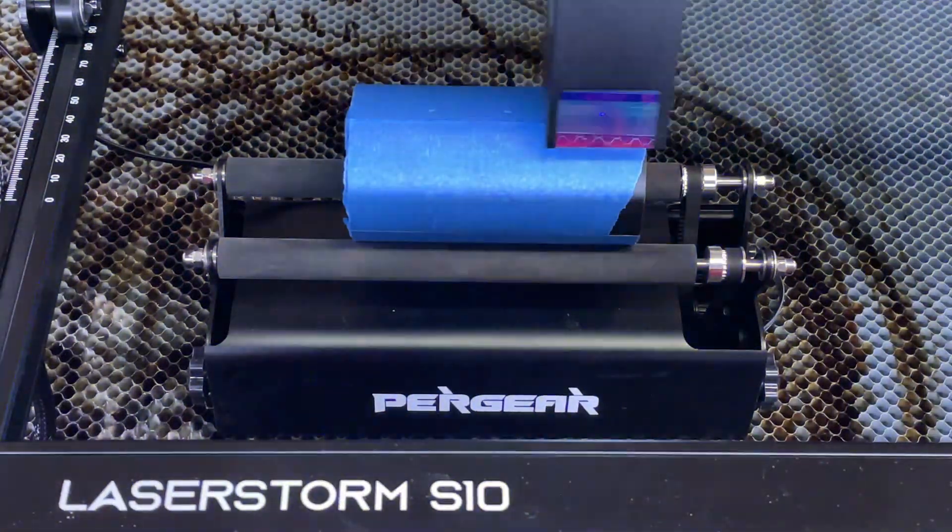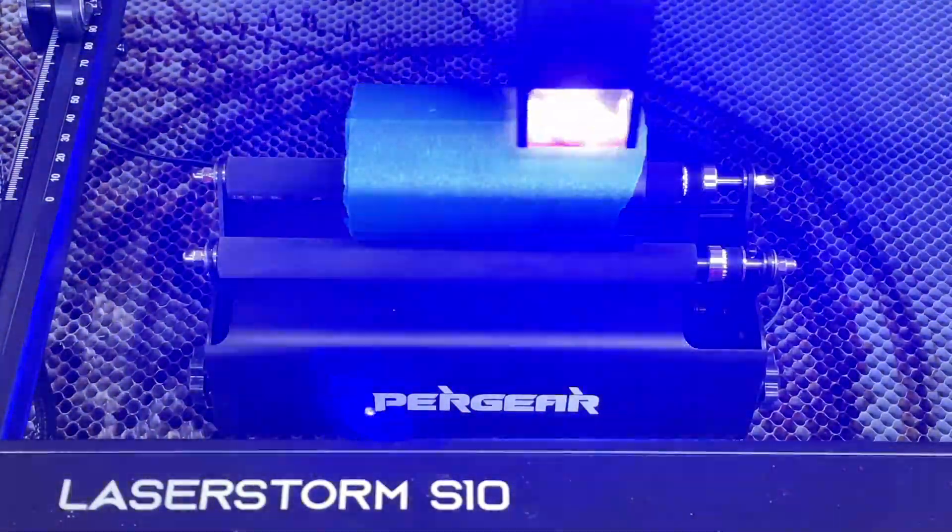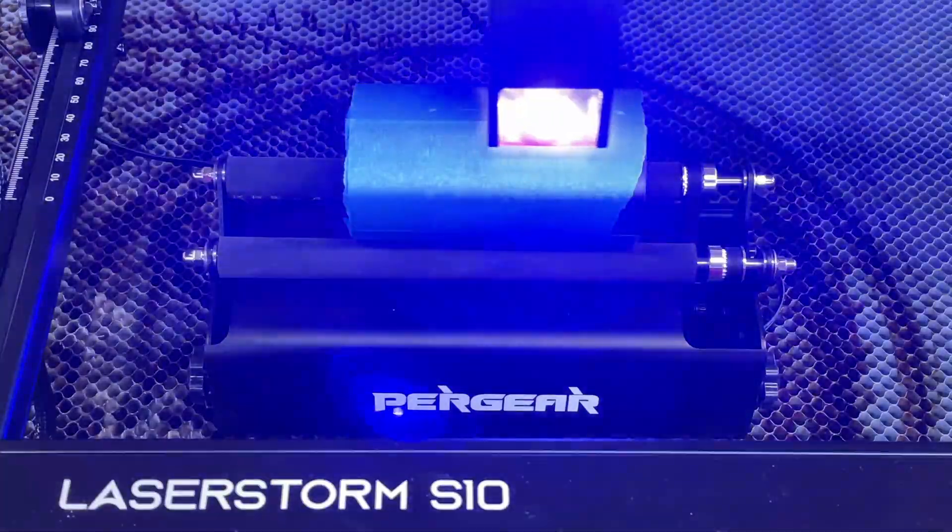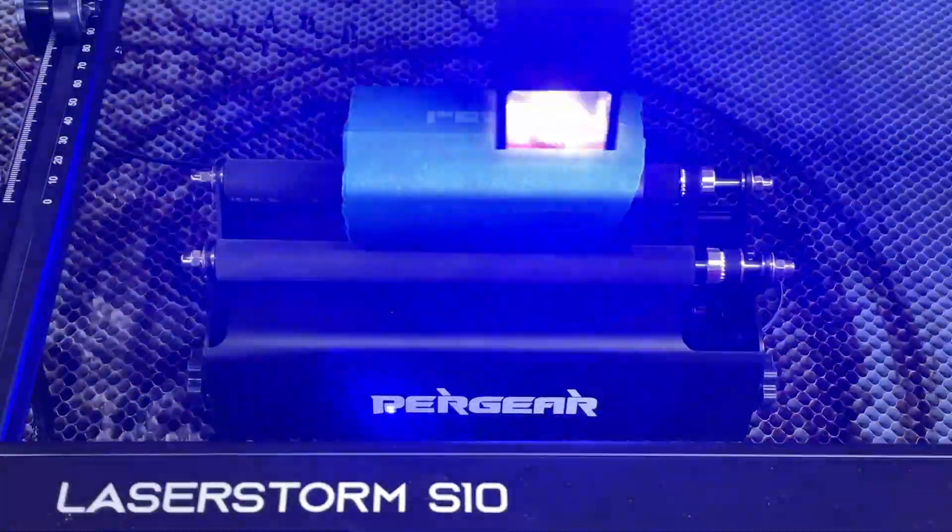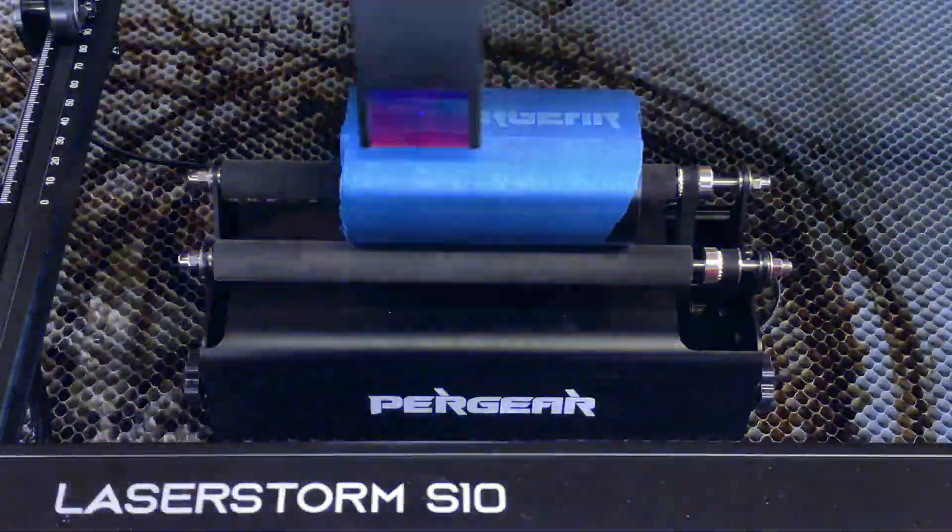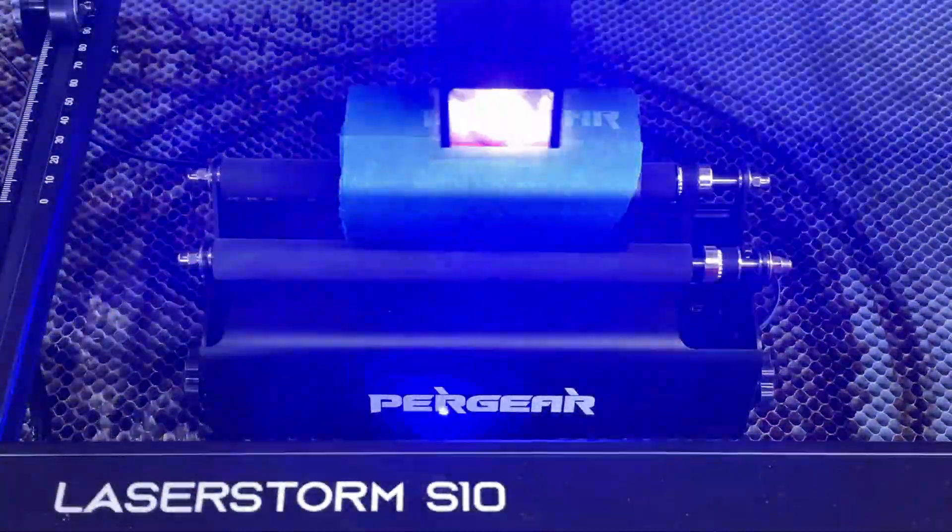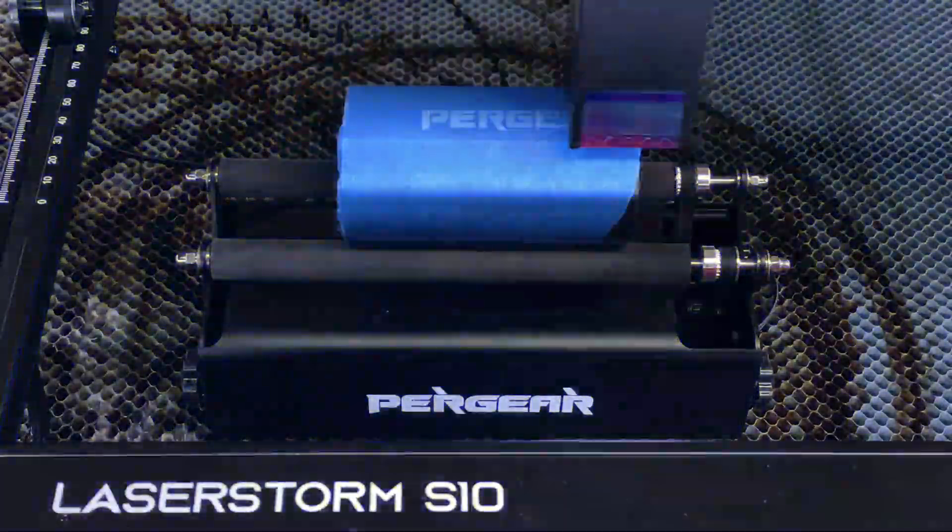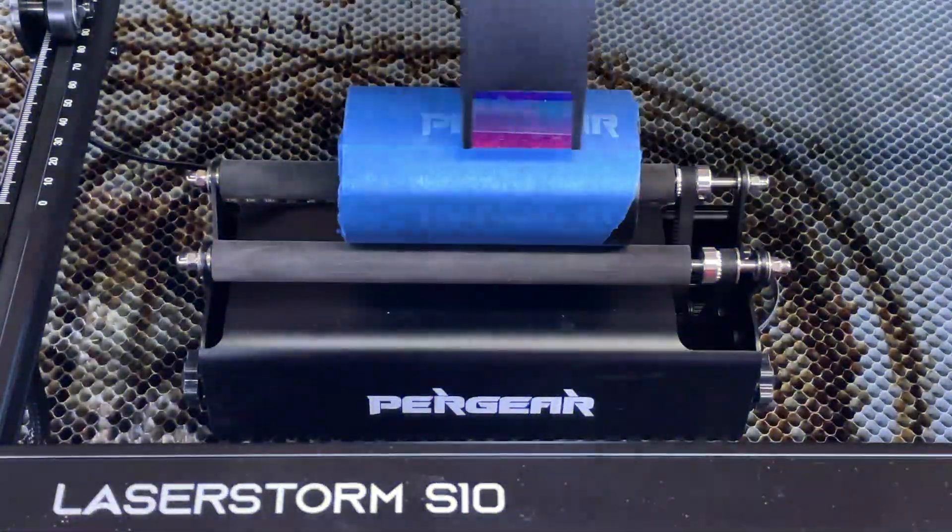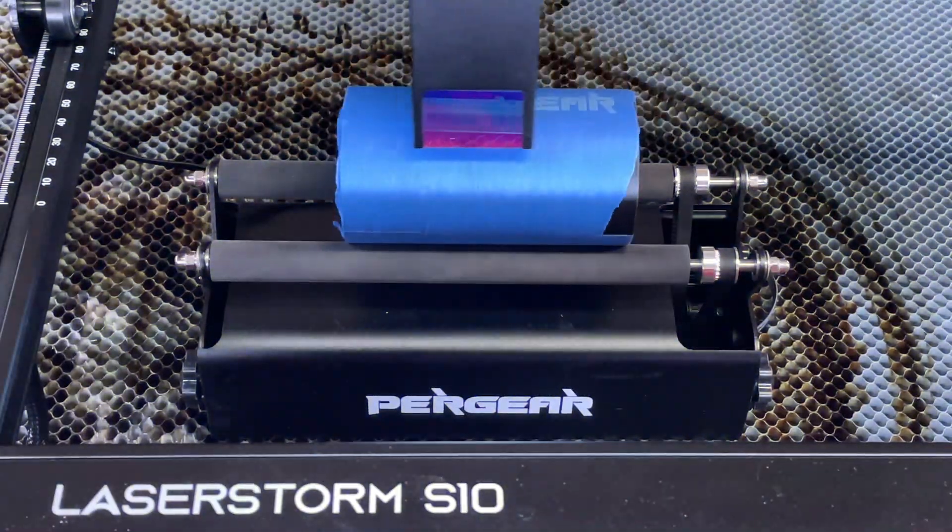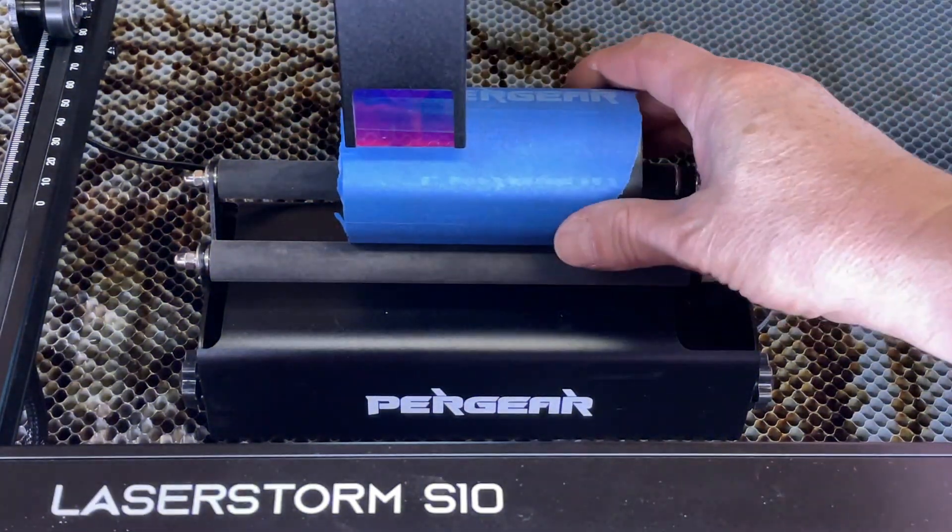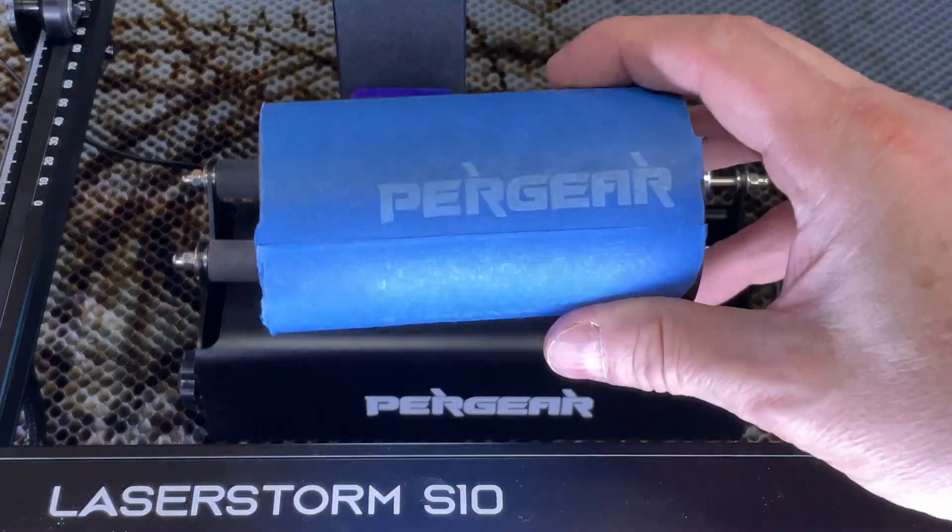So since this is a Pergear rotary attachment we'll start with the laser storm 10 which is a laser I reviewed recently and this is the companion rotary roller for it so we'll start with that and I'll just lay down some blue tape here just to make it stand out a little more and we'll just do an engrave on that and we'll see what it looks like and after that we'll do a few more challenging things.